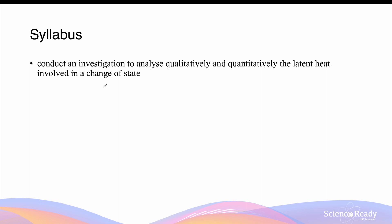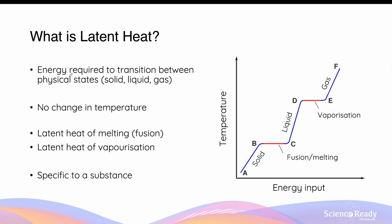This video is on the latent heat of state change. Latent heat of state change is the energy required by a substance to transition between its physical states, which include solids, liquids, and gases. When a substance is absorbing or releasing energy during a phase change, there is no change in its temperature. This is because when a substance reaches the temperature at which it's about to melt or evaporate, the additional heat is used to overcome the attractive forces between the molecules, rather than being transformed into kinetic energy.